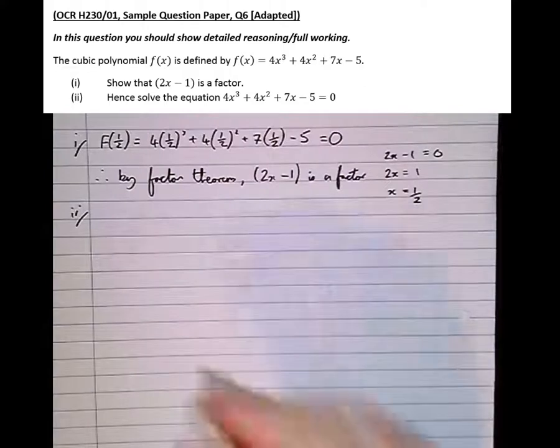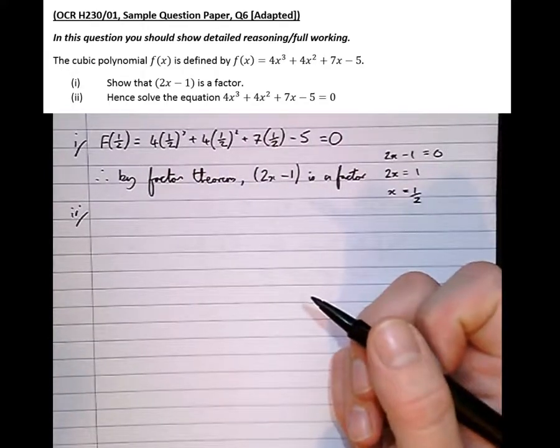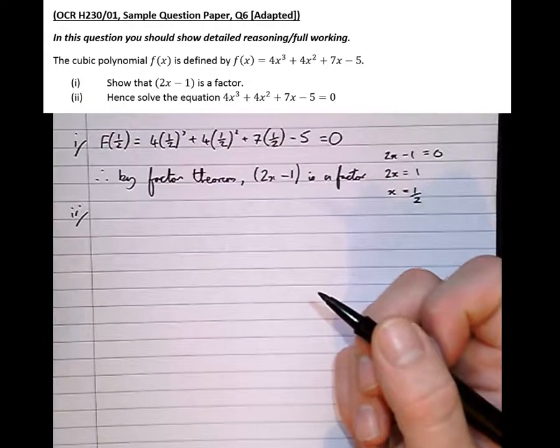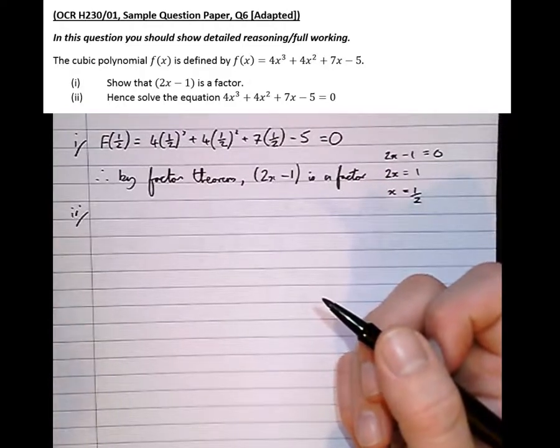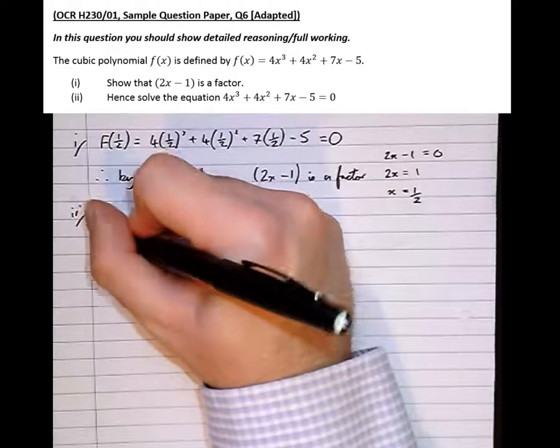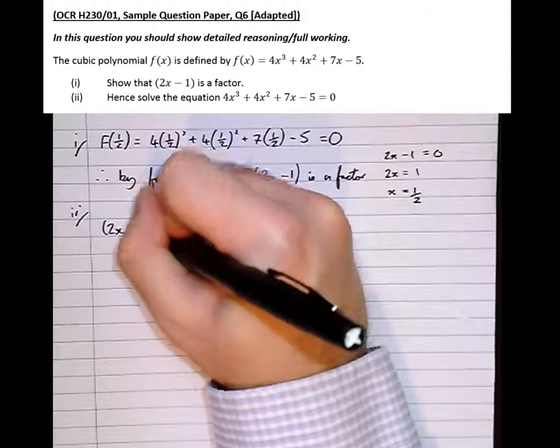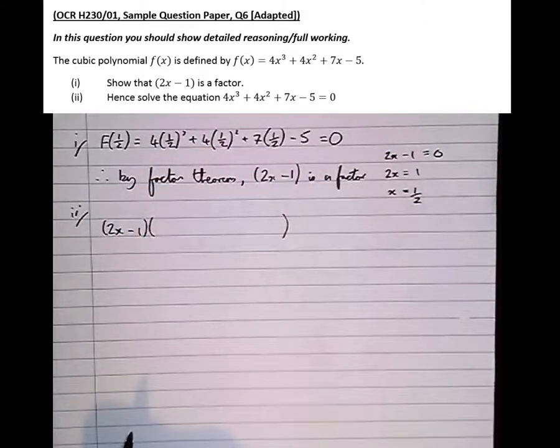Part 2. Hence solve the equation 4x cubed plus 4x squared plus 7x minus 5 equals 0. So again, it's not enough just to use the cubic solver. What we're going to have to do is factorize. We've got one factor, 2x minus 1.